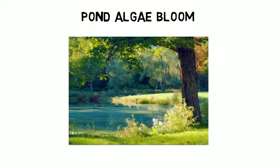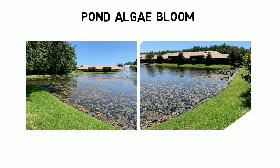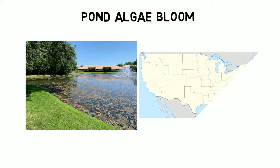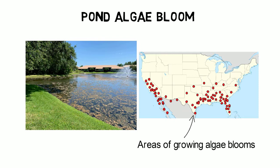A pond can be a beautiful and ornamental addition to a garden or home, but it might lose some of its charm if the water is green and murky with algae. Especially in warmer climates, algae bloom occurs more and more often in recent years. Therefore, it is important to understand what is causing the algae bloom prior to eliminating it.